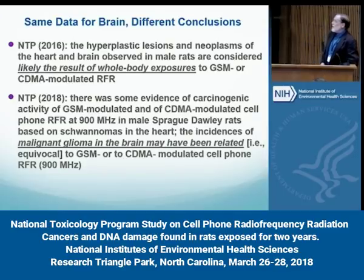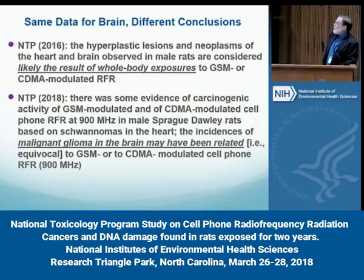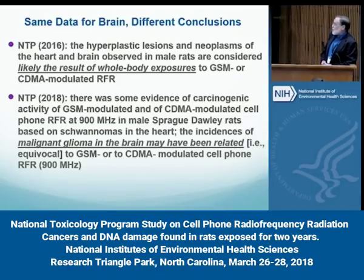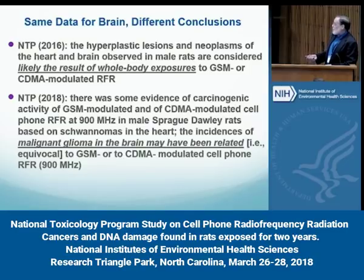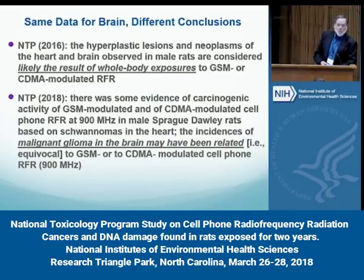In 2016, NTP reported that brain hyperplastic lesions and neoplasms of the heart and brain are considered likely the result of whole body exposures to GSM or CDMA-modulated RFR. But in the technical report, it says there was 'some evidence of carcinogenic activity' in male Sprague-Dawley rats based on schwannomas in the heart, while the incidence of malignant glioma in the brain 'may have been related' — meaning equivocal — to GSM-modulated cell phones. I ask: what is the new evidence that led to a different kind of conclusion?